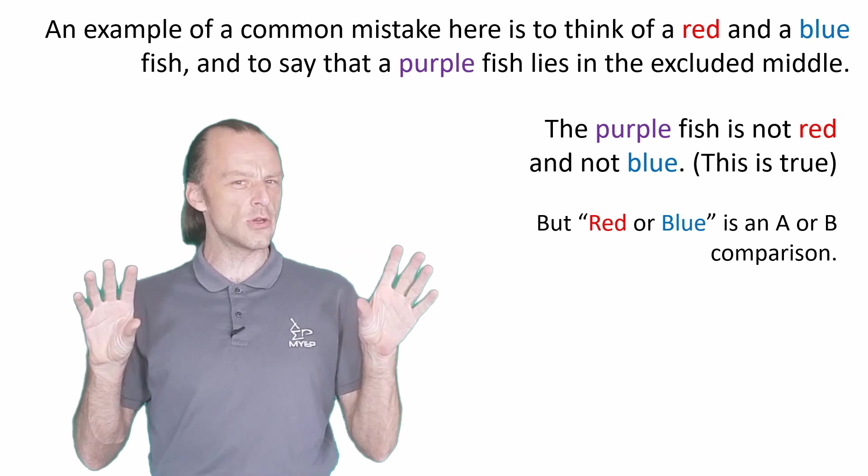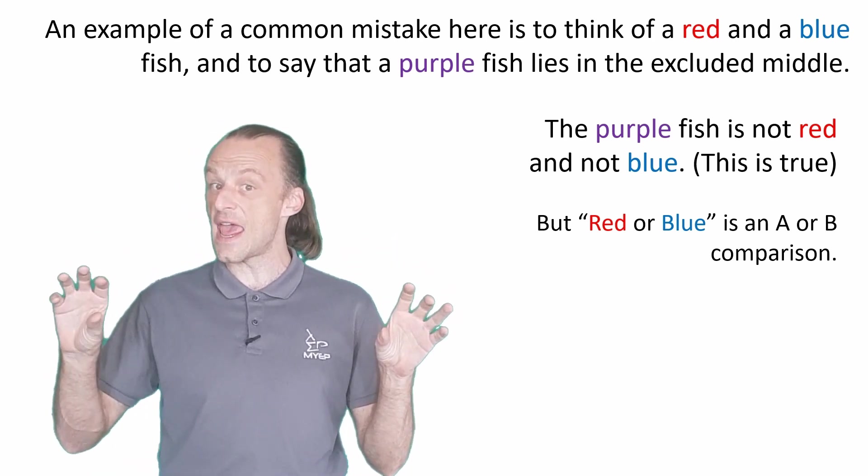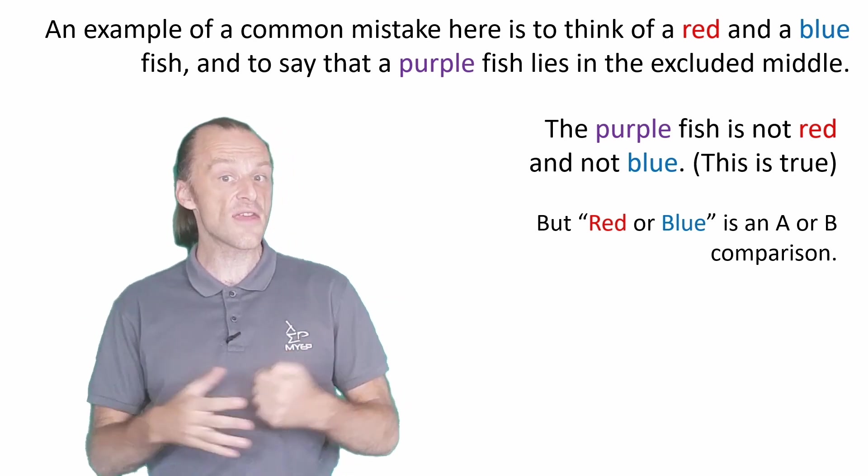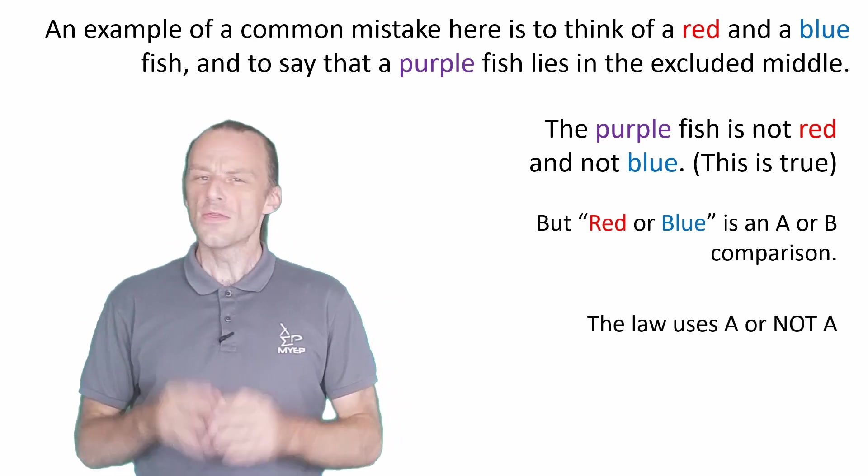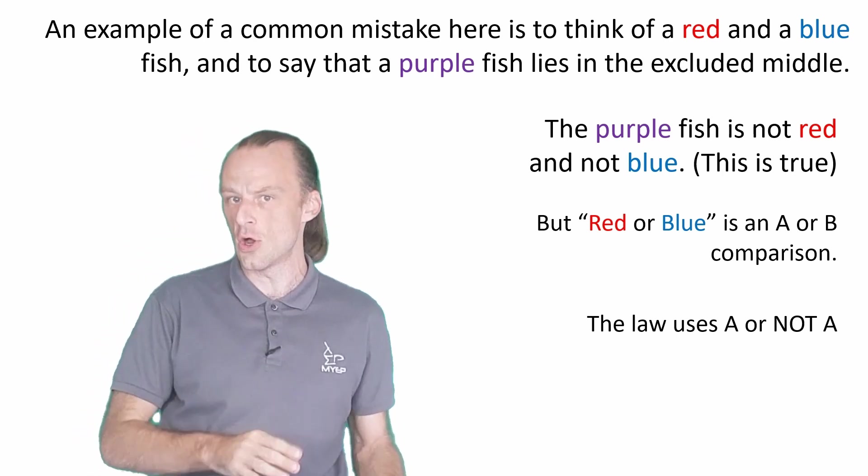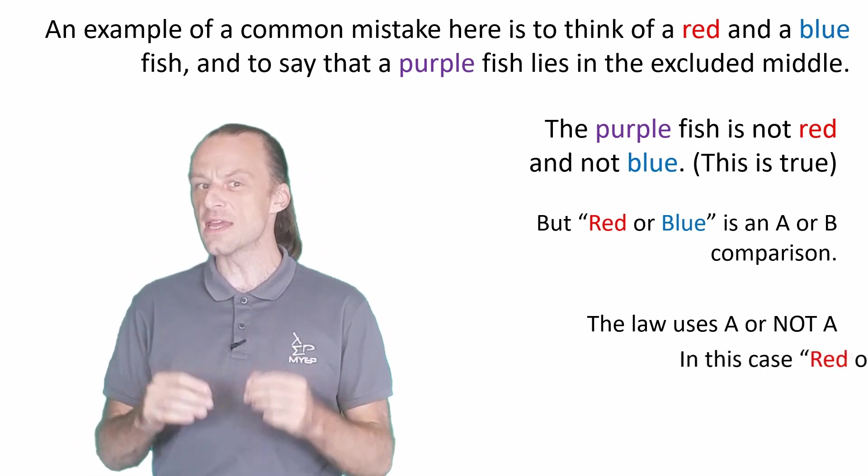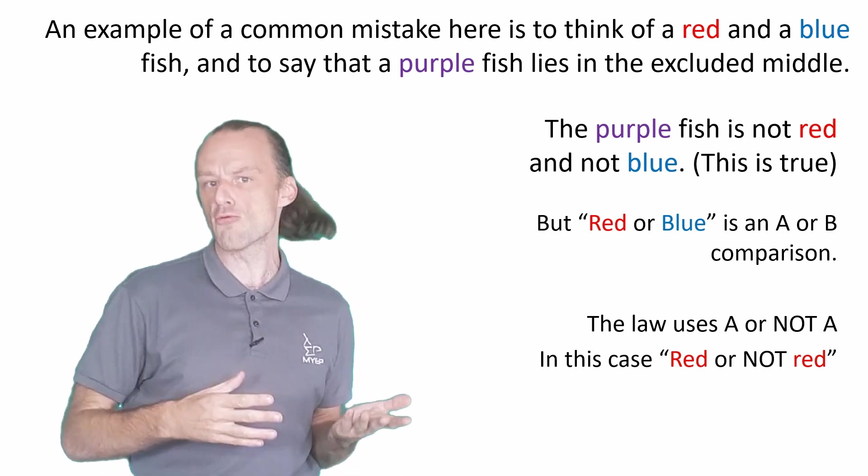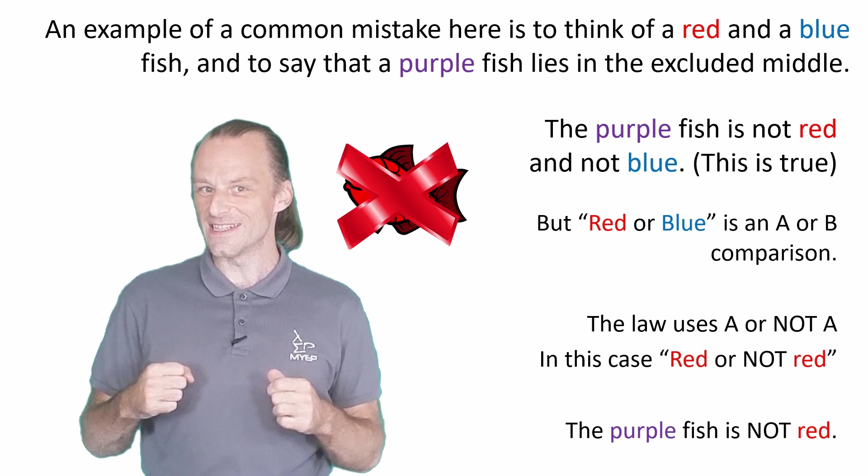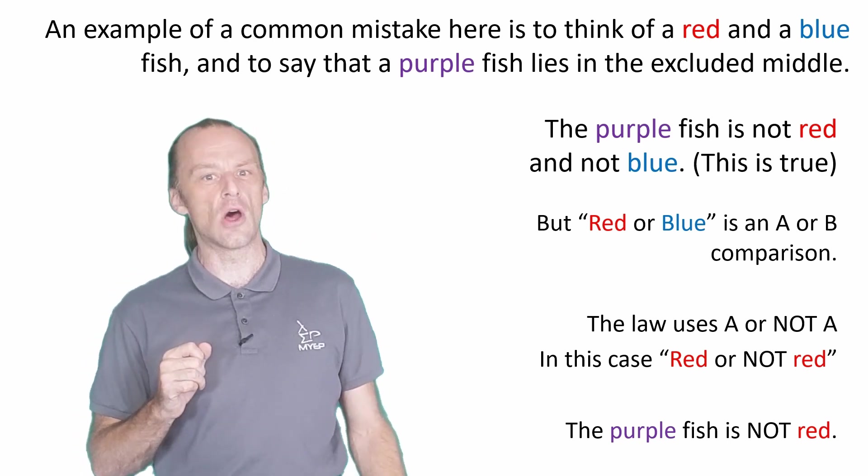but red or blue is a comparison between a and b, two different things, and purple is a third thing, c. The law of excluded middle is only talking about cases where a or not a, which is in this case maybe red or not red, and quite clearly the purple fish is not red. So the law of excluded middle holds.